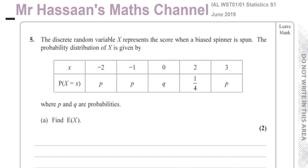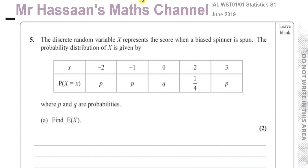Welcome back to Mr. Hassan's Maths Channel. I'm going to go through question number 5 from June 2019, International A-Level Statistics 1, the S1 paper. It's a question about discrete random variables.